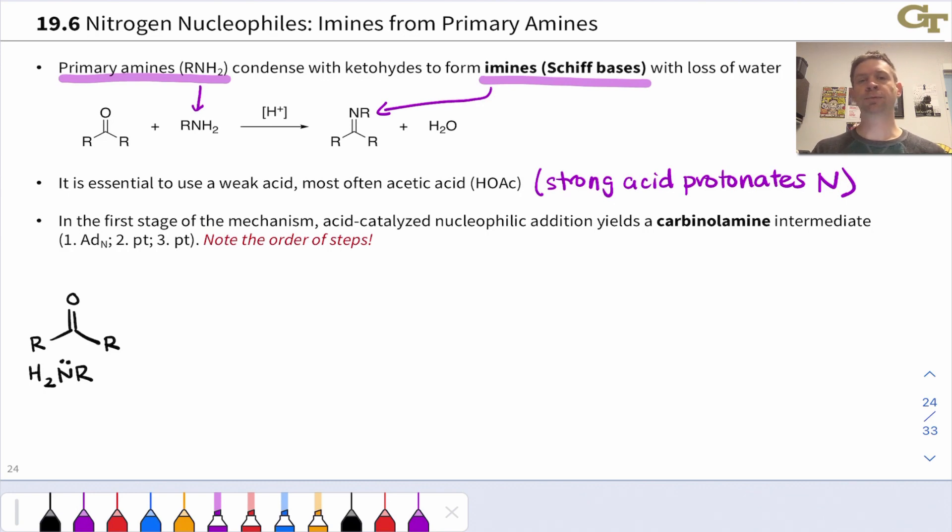Mechanistically, this reaction follows the same basic pattern of acetal formation in terms of the nucleophile adds and then a molecule of water is eliminated with various proton transfers, but imine formation is different in that the order of steps is different. Because we're using a weak acid like acetic acid, protonation of the carbonyl group isn't really a reasonable first step. Instead, the amine can add directly to the electrophilic carbonyl carbon and we end up with a zwitterionic species.